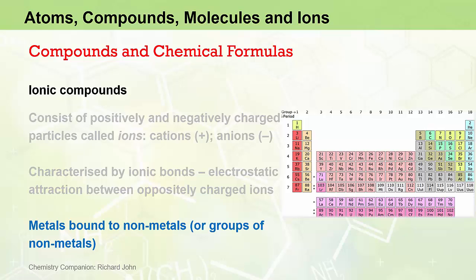For now, the most important point to note is that ionic compounds consist of metals bound to non-metals or metals bound to groups of non-metals. So we are talking about elements from this part of the periodic table, the non-metals.